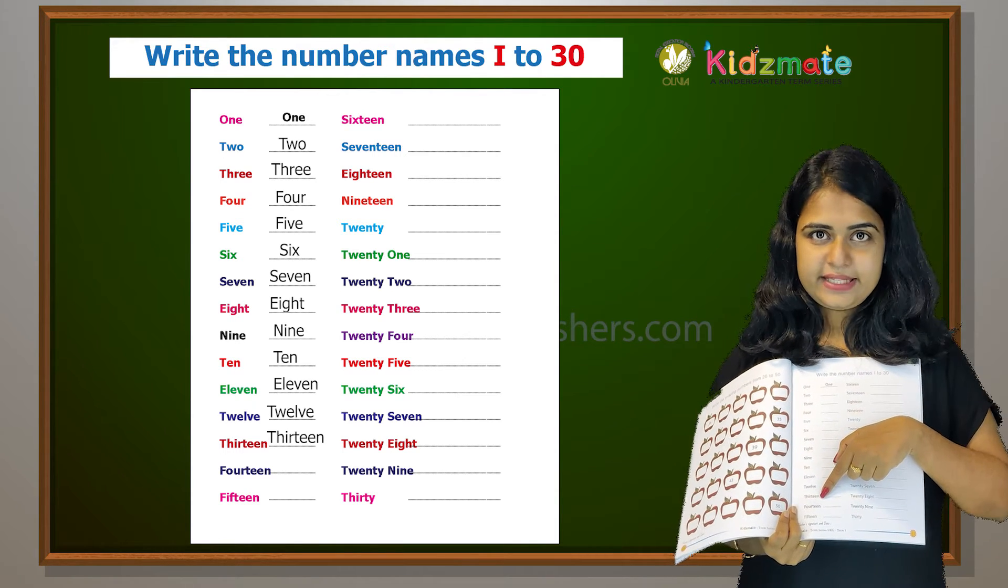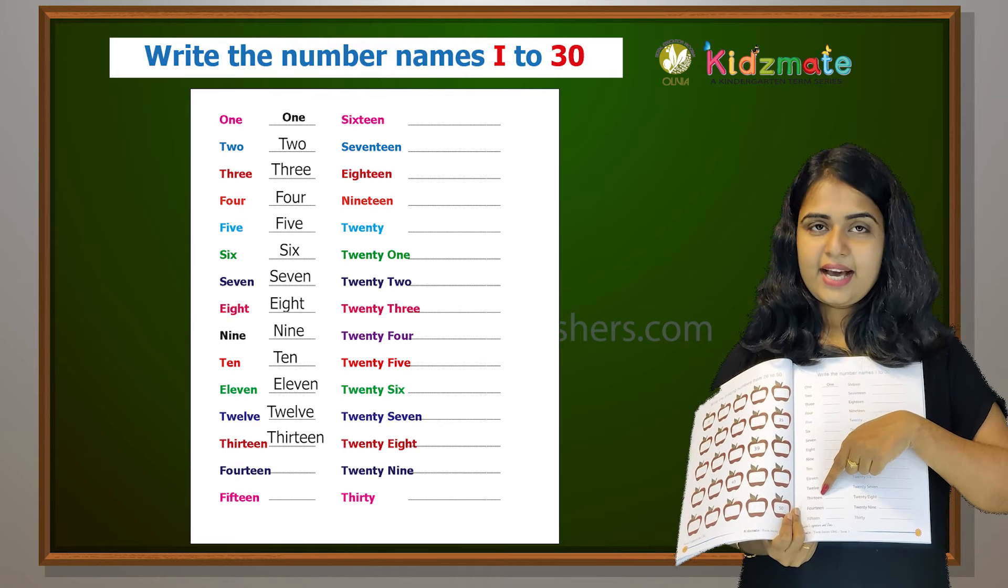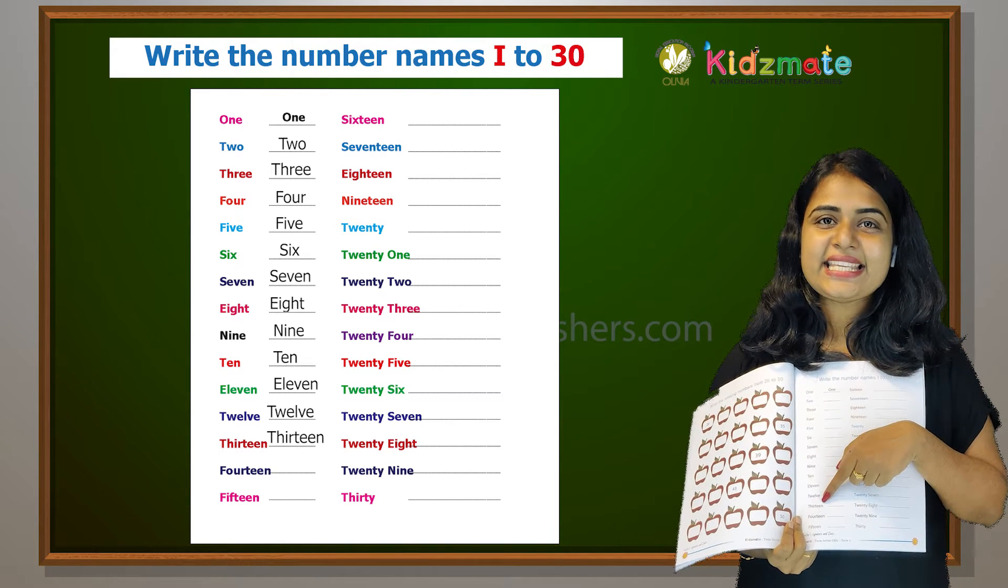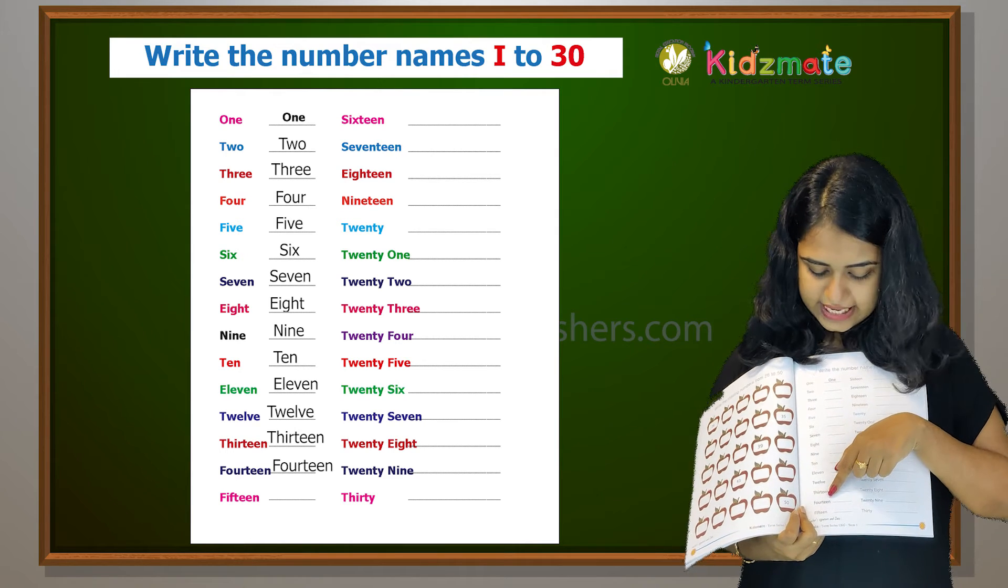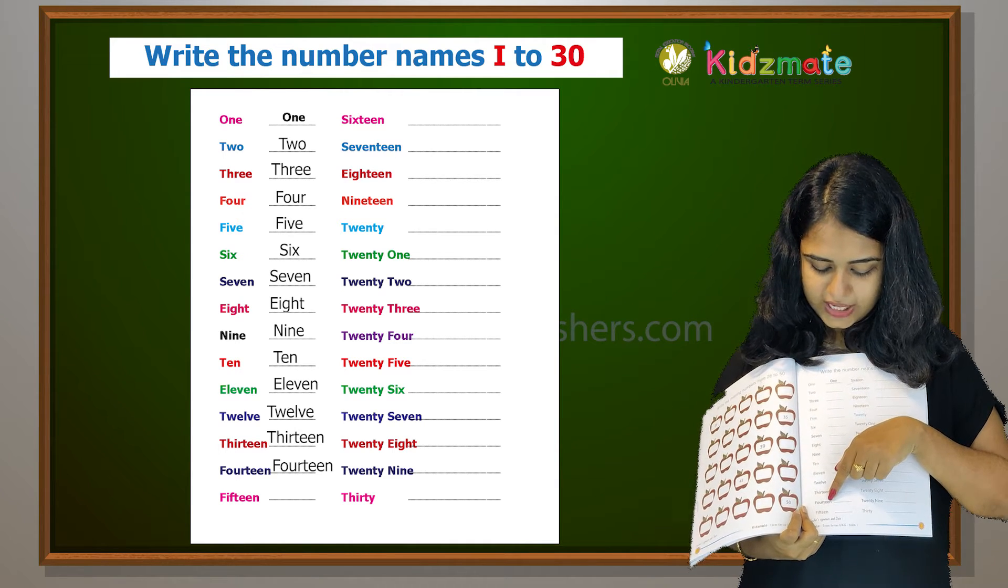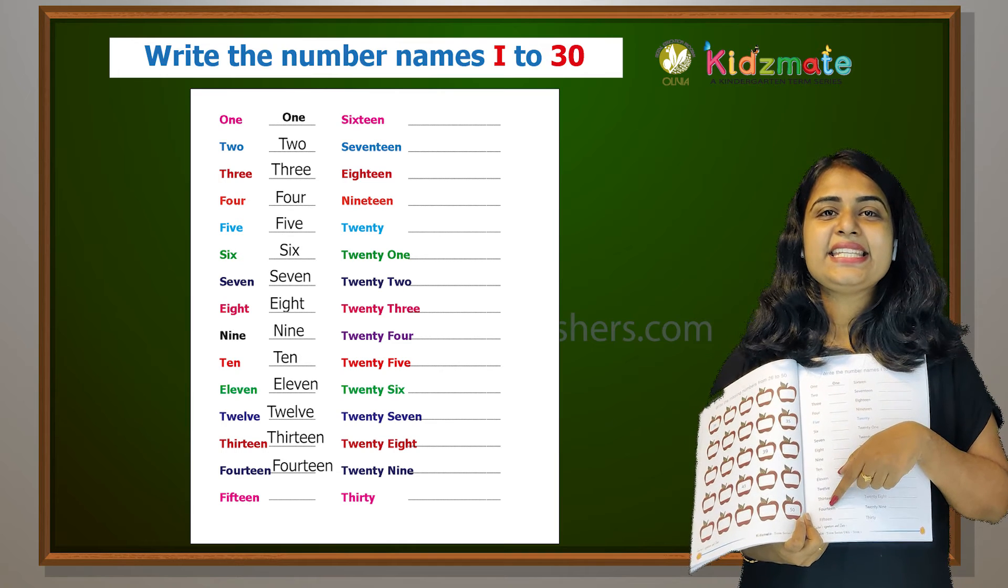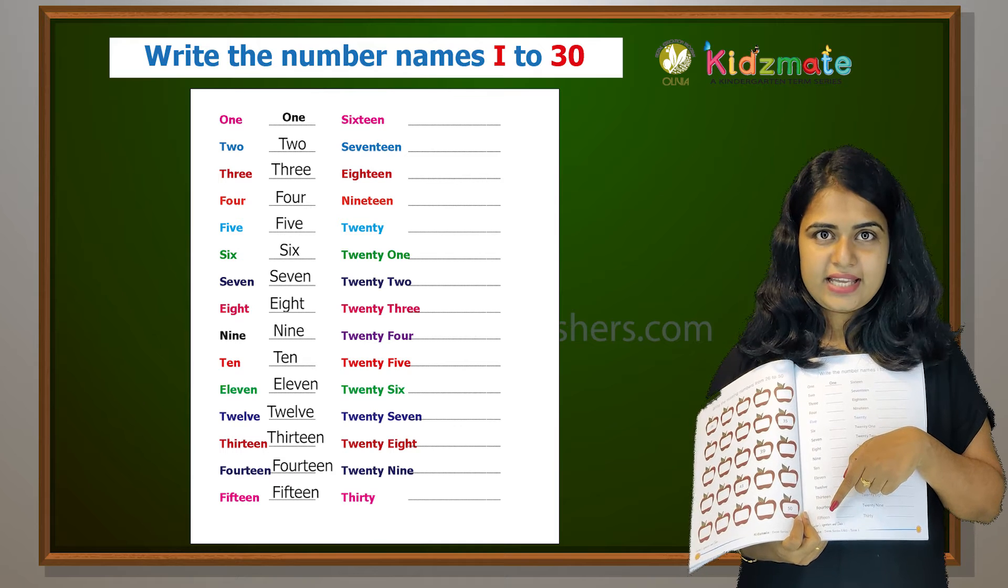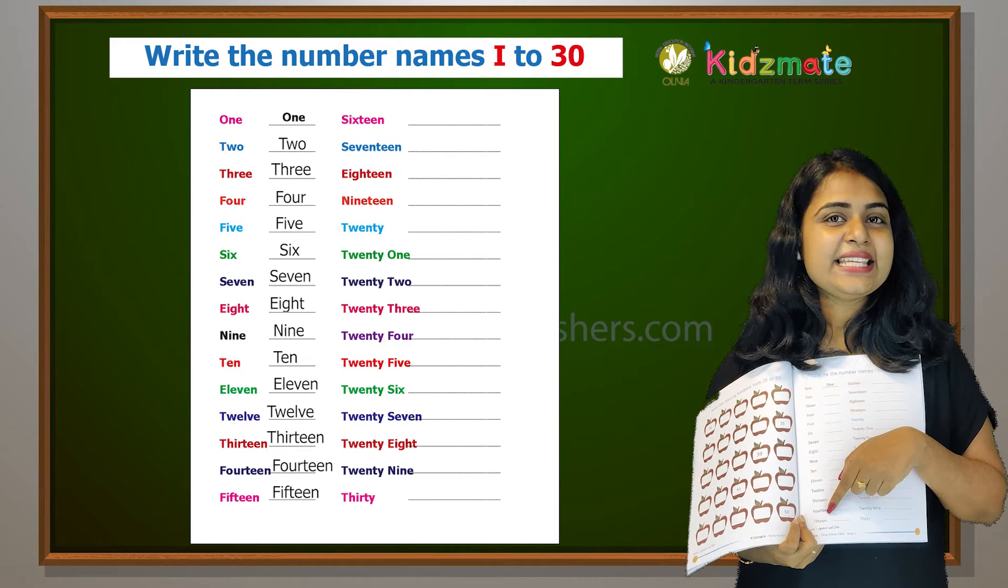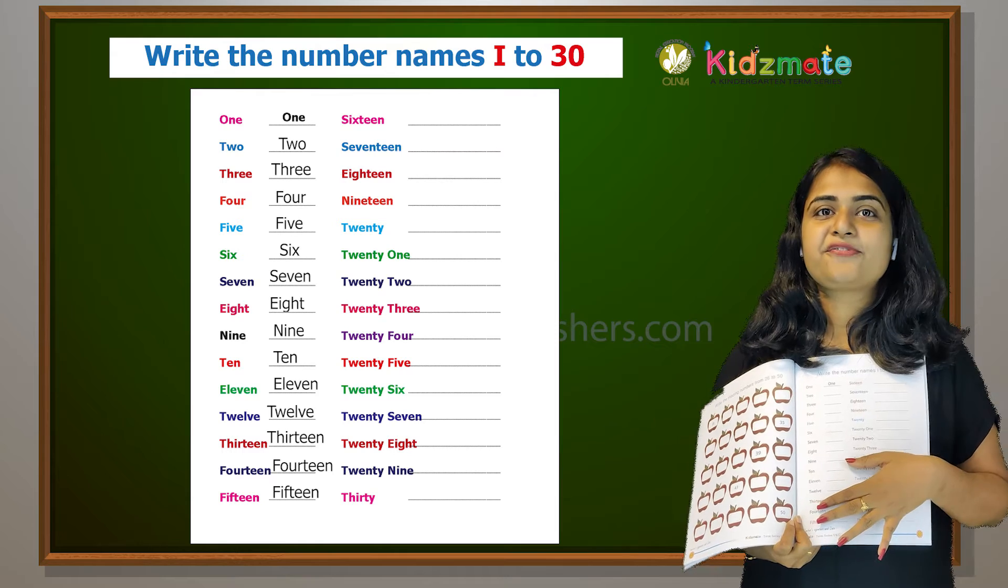Thirteen, it is spelled T-H-I-R-T-E-E-N, thirteen. And fourteen, F-O-U-R-T-E-E-N, fourteen. And fifteen, F-I-F-T-E-E-N, fifteen.